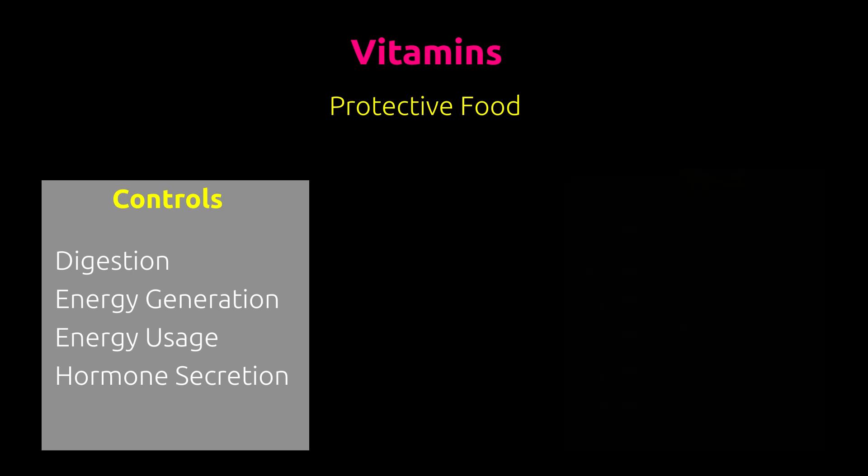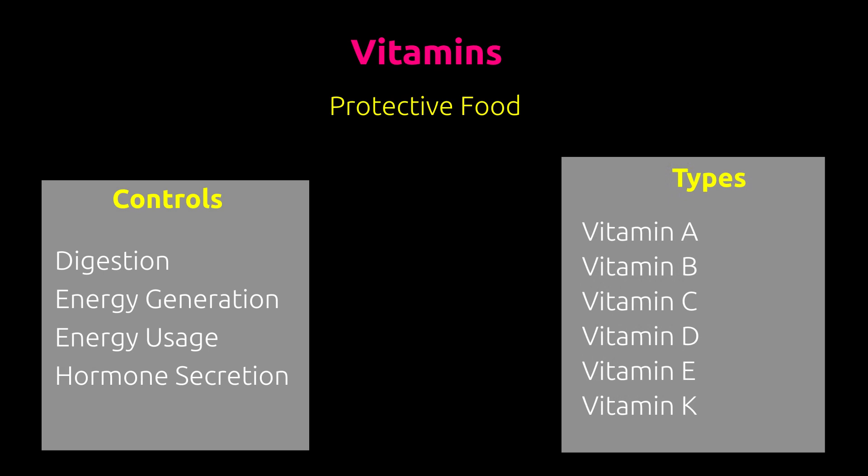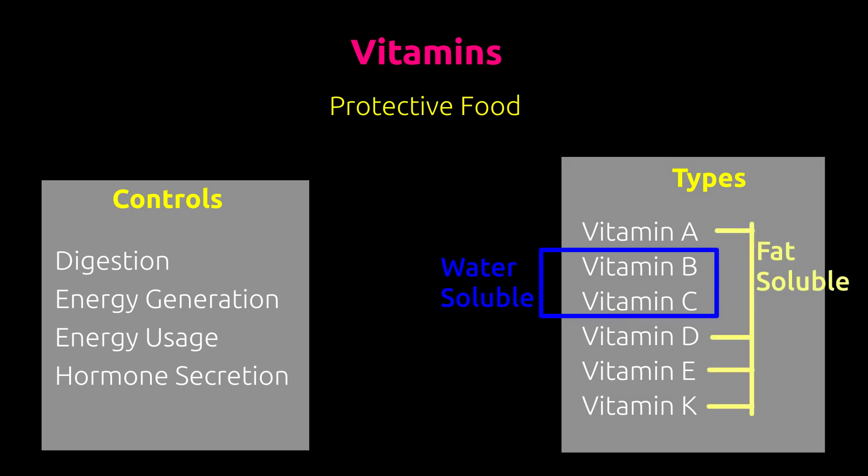There are six major vitamins, namely A, B, C, D, E, and K. Vitamins B and C are water-soluble. Vitamins A, D, E, and K are fat-soluble. Excessive intake of fat-soluble vitamins can cause some health problems, but excessive water-soluble vitamins get removed from the body through urine.